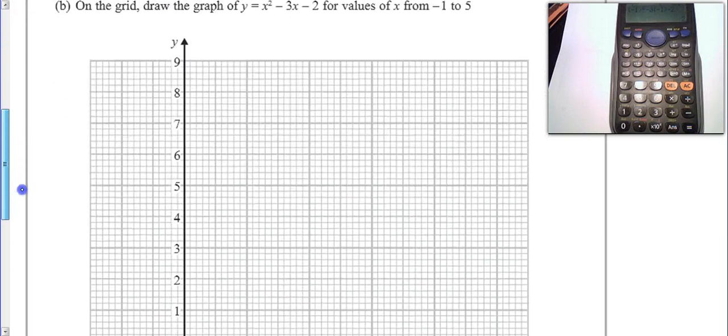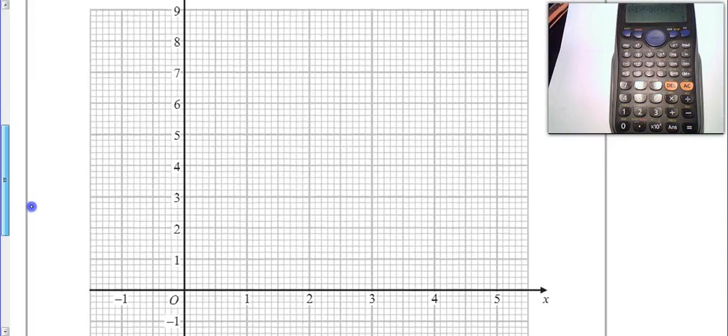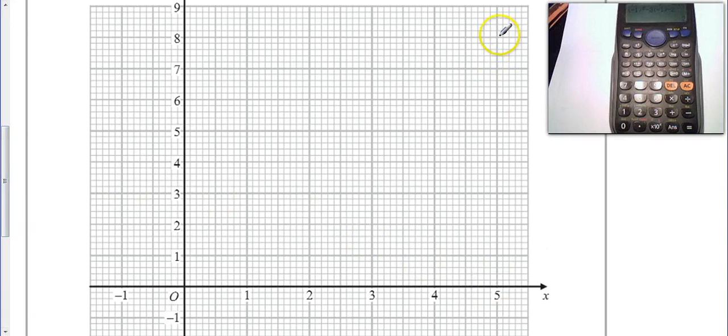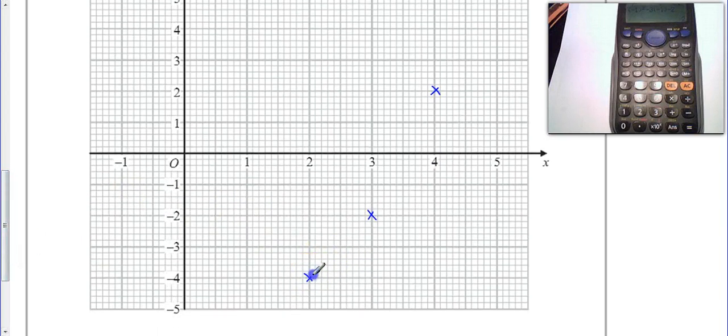Now we're going to go ahead and plot this on our graph. So let's see where we are. So 5 goes to 8 up here, let's put a point in there. 4 goes to 2, 3 goes to minus 2, we need to go down a little bit. 2 to minus 4, 1 to minus 4, 0 minus 2, and minus 1, 2. So you can see there's a pattern here that's symmetry.